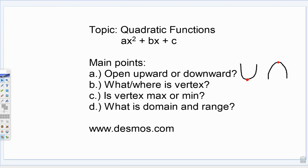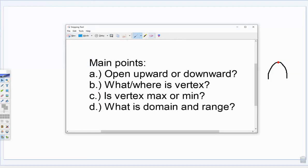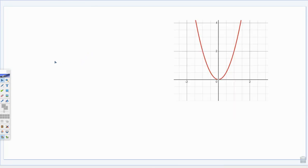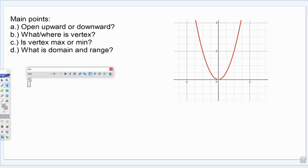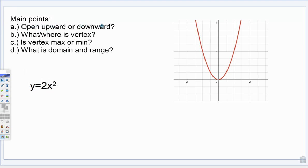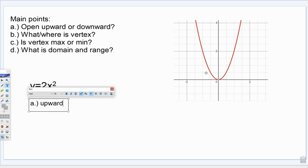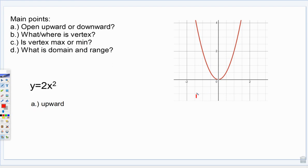Specifically, the four questions. This function was y equals 2x squared. The very first question we want to answer is, is this opening upward or downward? Hopefully just by looking at the graph, we can see that it is opening upward. So our answer for A would just be upward. If it was going the other way, that would be downward, but that's not what it's doing — it's opening upward.